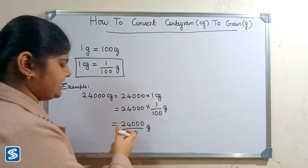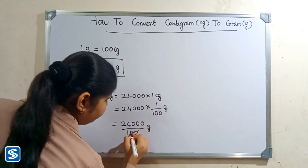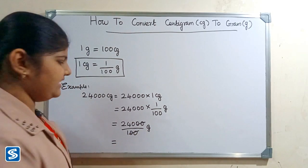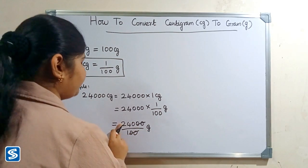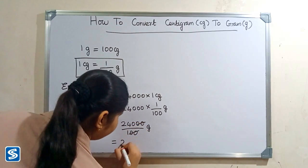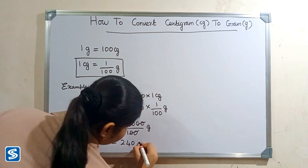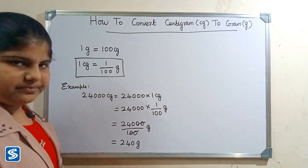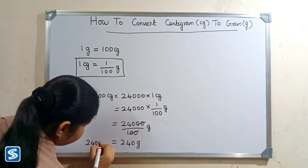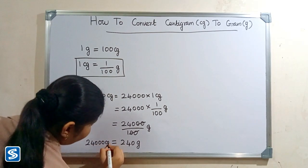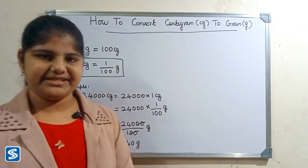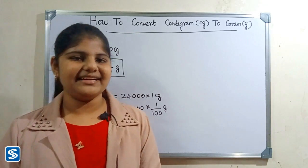24,000 multiply one will be 24,000, so 24,000 by 100 grams. Here zero and zero gets cancelled, so when we divide 24,000 by 100 our answer will be 240 grams. So 24,000 centigrams is equal to 240 grams.